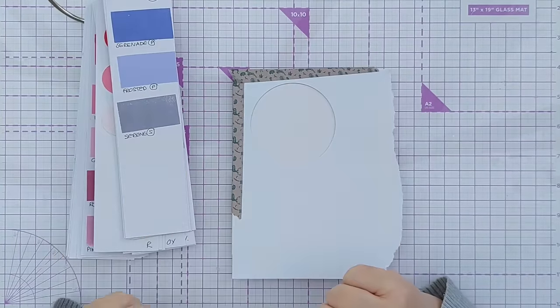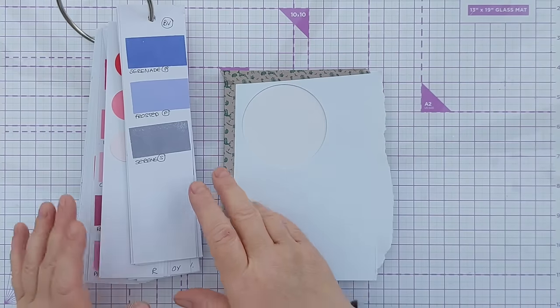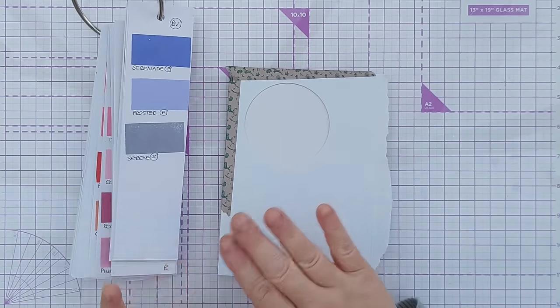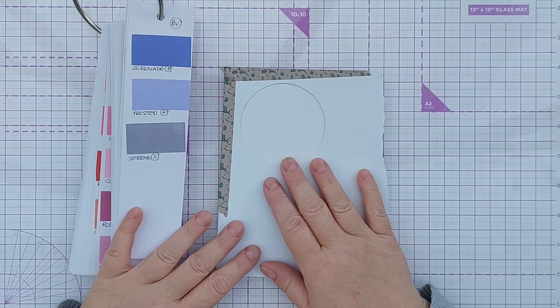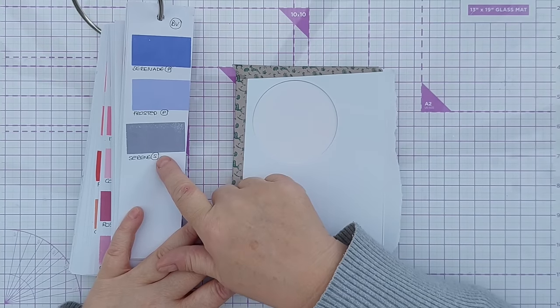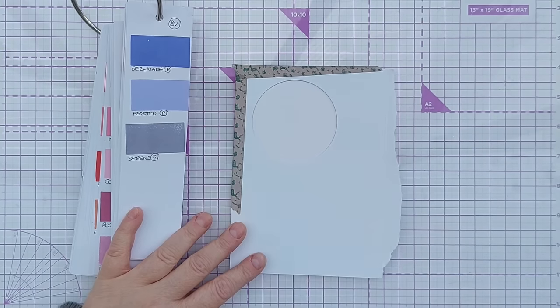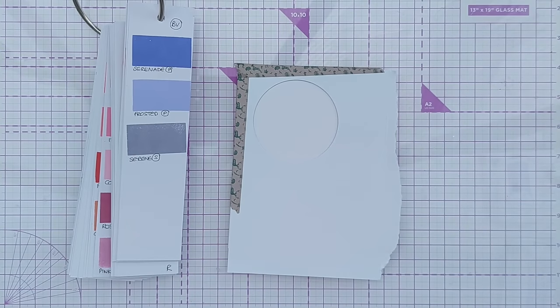So for my blending I'm going to do blue violets today. I'm always drawn to pinks and teals but I feel like changing it up a bit. So I'm going to use Serene which is from the Spa collection of Catherine Pooler inks, Frosted and Serenade and these two are from the Party collection but they're all blue violet.